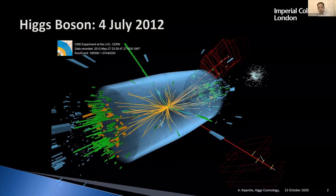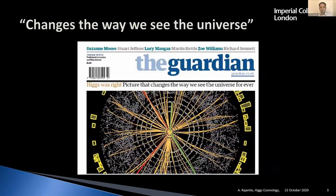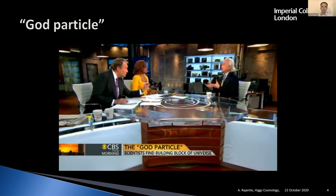This is about the Higgs boson. Many of you are probably familiar with the discovery of the Higgs boson eight years ago at CERN at the Large Hadron Collider. Two experiments, CMS and ATLAS, found this new particle called the Higgs boson, which made big headlines. The Guardian said it changes the way we see the universe forever. Some people like to call it the God particle. What I want to talk about is precisely what it is and how it changes the way we see the universe, especially now eight years later.